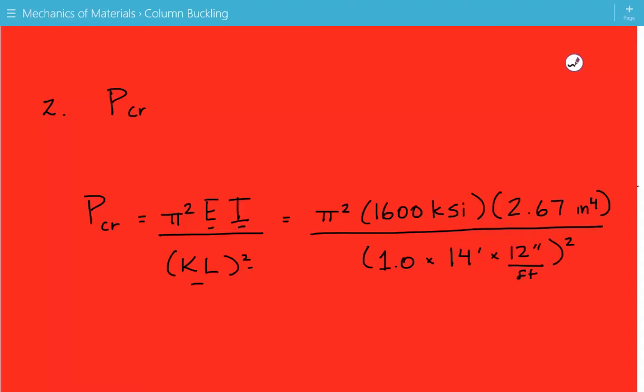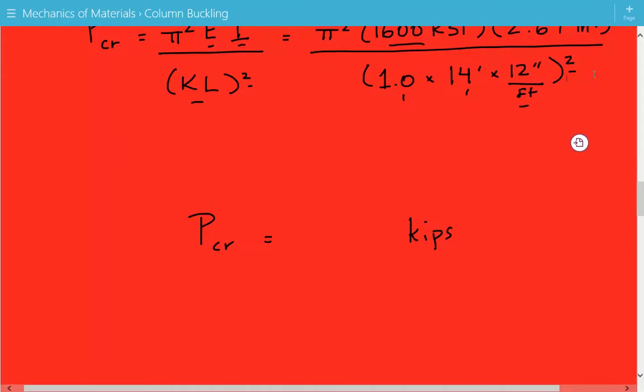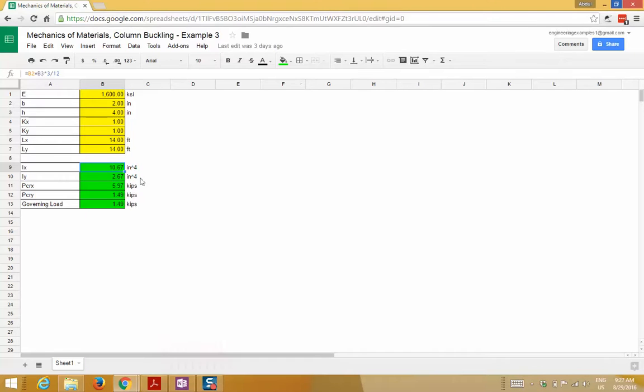Plug in the numbers: pi squared times 1600 ksi times the moment of inertia. Here we're using Iy because this is the least moment of inertia. Divide it by kl, effective length 1 times 14 feet, and then multiply by 12 inches to get it into inches squared. So the critical buckling load is equal to 1.49 kips.